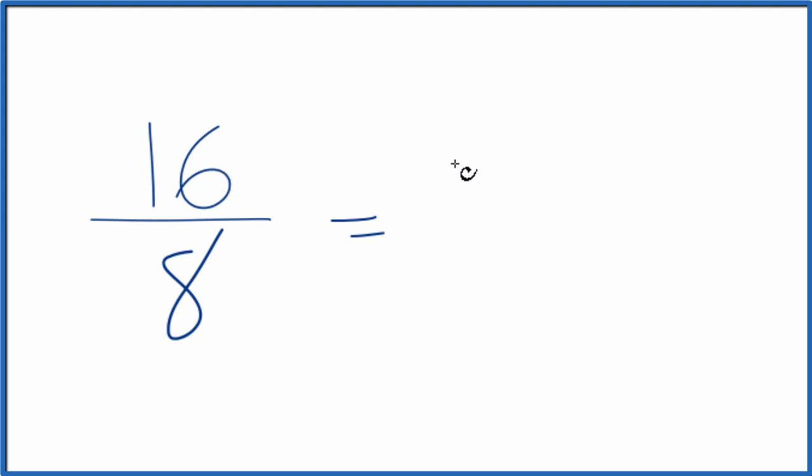So 16 divided by 8 is 2. 8 divided by 8 is 1. So we've simplified the fraction 16 eighths down to 2 over 1.